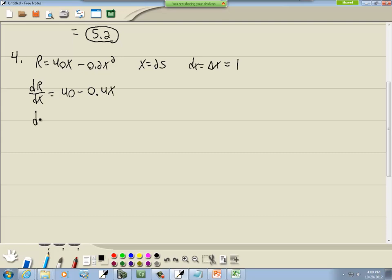Multiply both sides by dx so you've got change in R, change in revenue is equal to 40 minus 0.4x times dx. And again, we're wondering what change of x is when it changes with 1 unit, so they're telling us dx is 1. And here I'm going to put in 25 for the x times 1. And let me plug in my calculator, 40 minus 0.4 times 25 is 30.